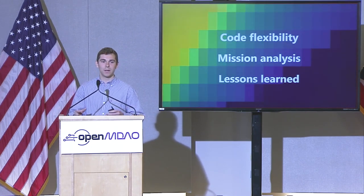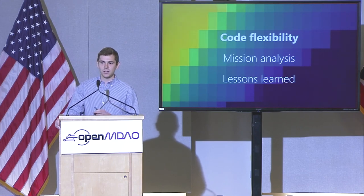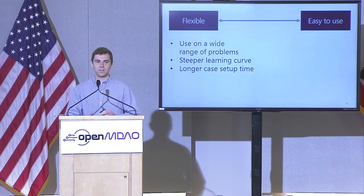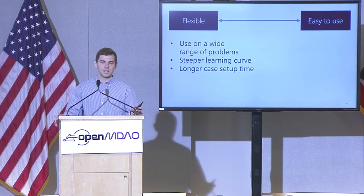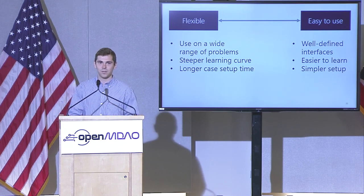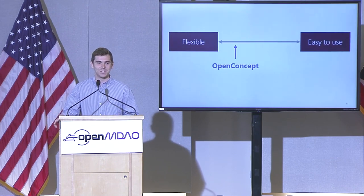Now I'm going to talk about how we actually do this — our philosophy in developing the code, how we do the mission analysis, and what we've learned through that process. There's a common problem in software development: you can make things really flexible, usable for a wide range of problems and customizable, but it means the user needs to do more work figuring out how to set up models. On the other side, you can make it easy to use with well-defined interfaces where you plug in aerodynamics and propulsion and it assembles everything. This tool was originally really designed for us, so we ended up less easy to use but quite flexible.